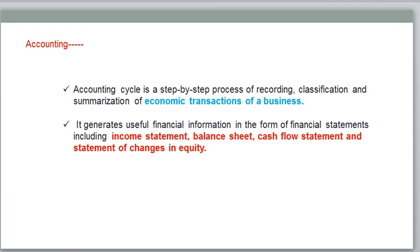In the accounting cycle, there is one more point to explain: the trial balance. Before preparing financial statements, we need to check whether all the entries are correctly posted or not, whether all the debits and credits are equal or not, and whether anything is missing or not adjusted. If debits and credits are not balanced, the balance is not balancing. So for checking, we need to prepare a trial balance — to know the arithmetical accuracy.